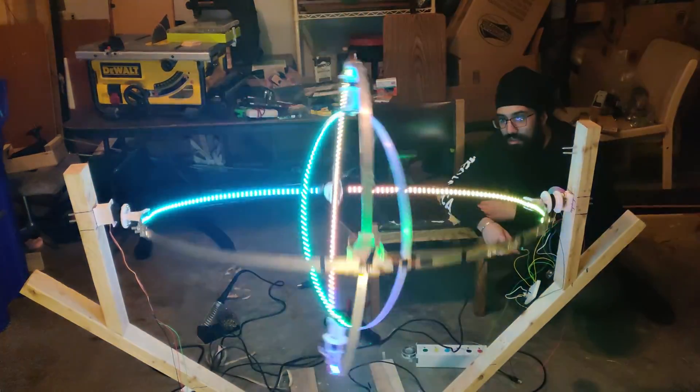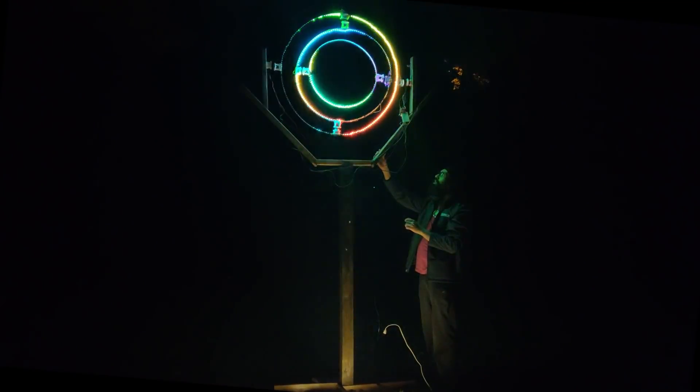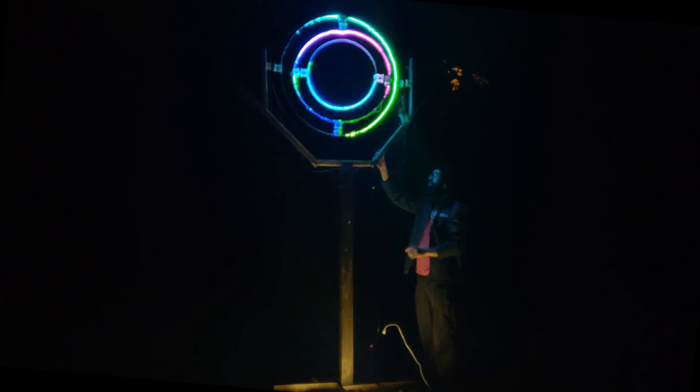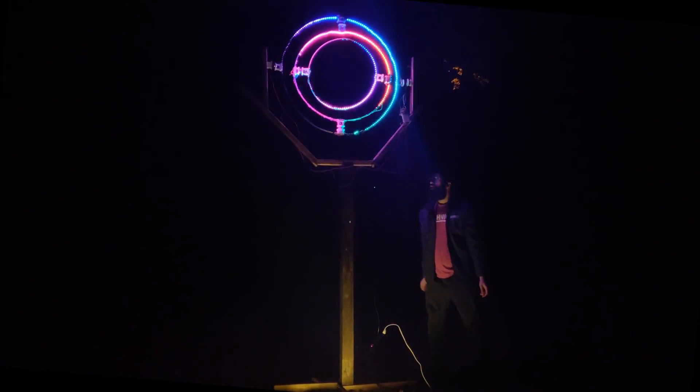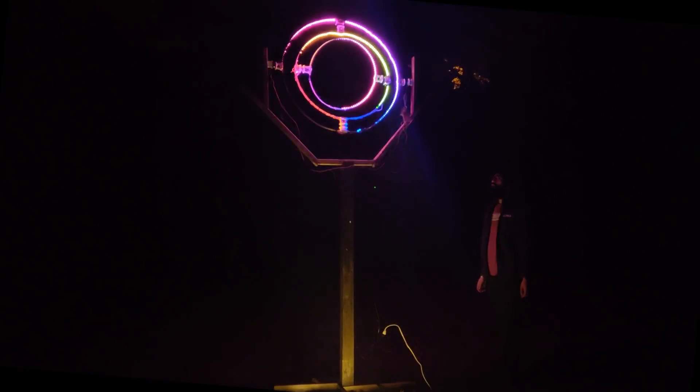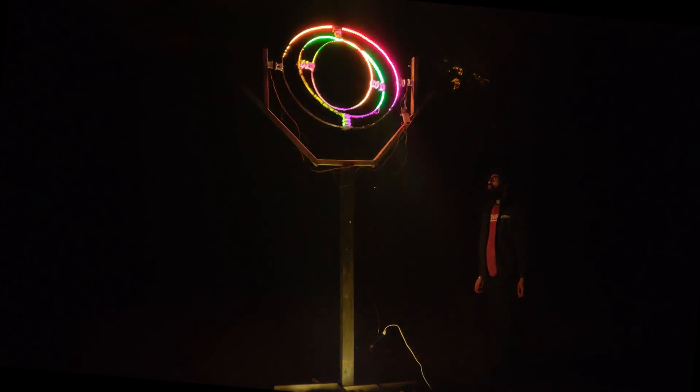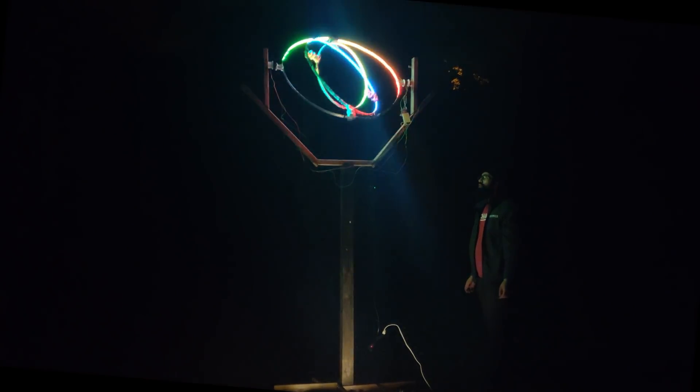This particular spinning armillary consists of three metal rings mounted 90 degrees offset from one another. It has LEDs, servos, and slip rings within the rings to cause it to light up and rotate automatically.